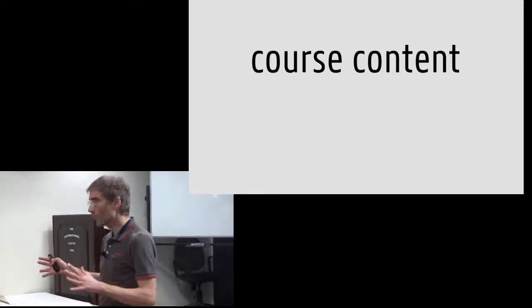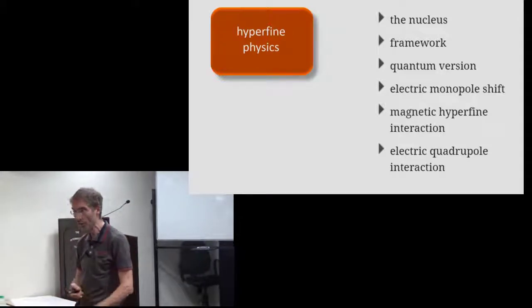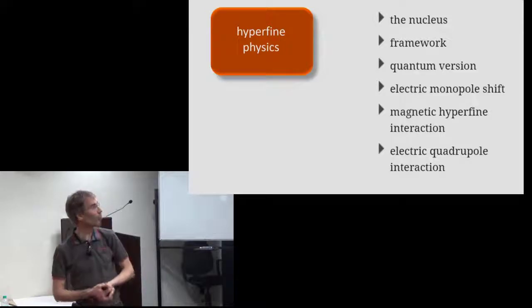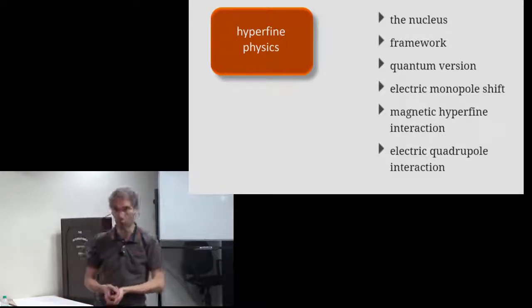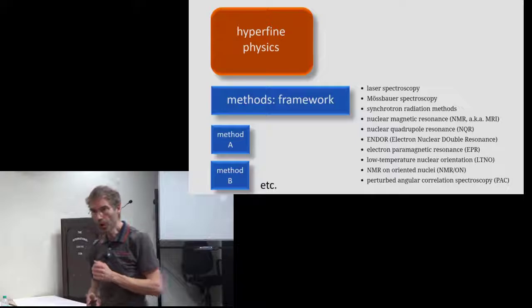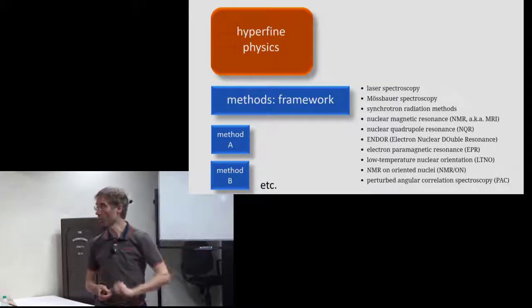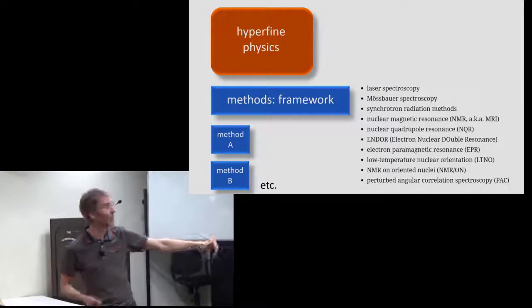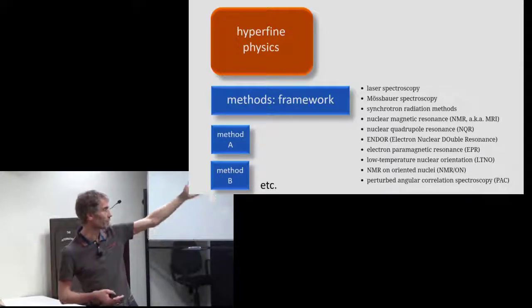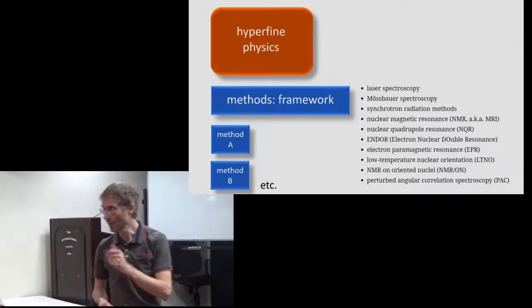That was about the organization of that course. What is the content? There are two main sections. One of them is about the physics of hyperfine interactions. What you see there are the typical things you have in a course on hyperfine interactions: the electric monopole shift, the magnetic hyperfine interaction, the electric quadrupole interaction. The second part is about experimental methods that make use of hyperfine interactions. The list of methods currently dealt with is what you see there. Many of the topics we have met in the past few days: laser spectroscopy, NMR, synchrotron radiation methods, PAC are covered in this method section.